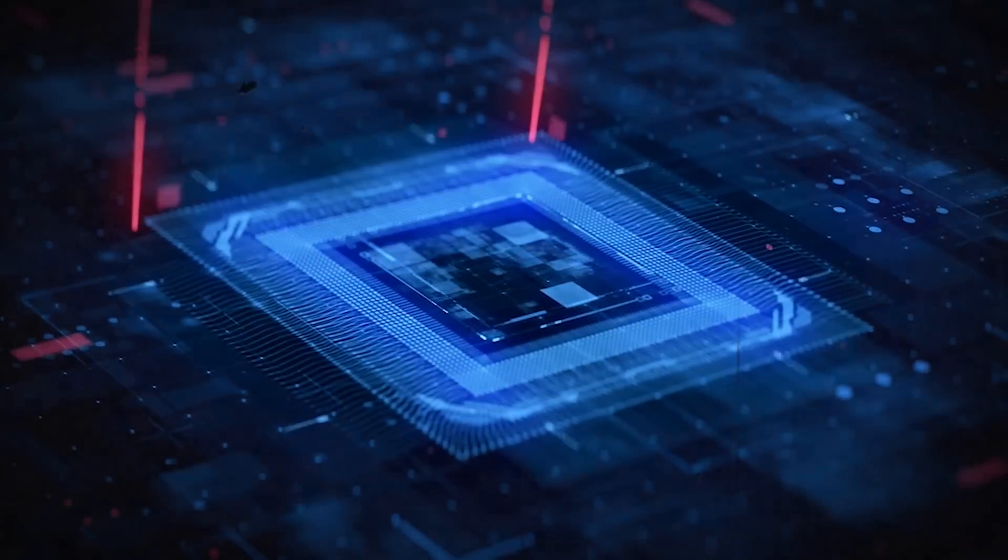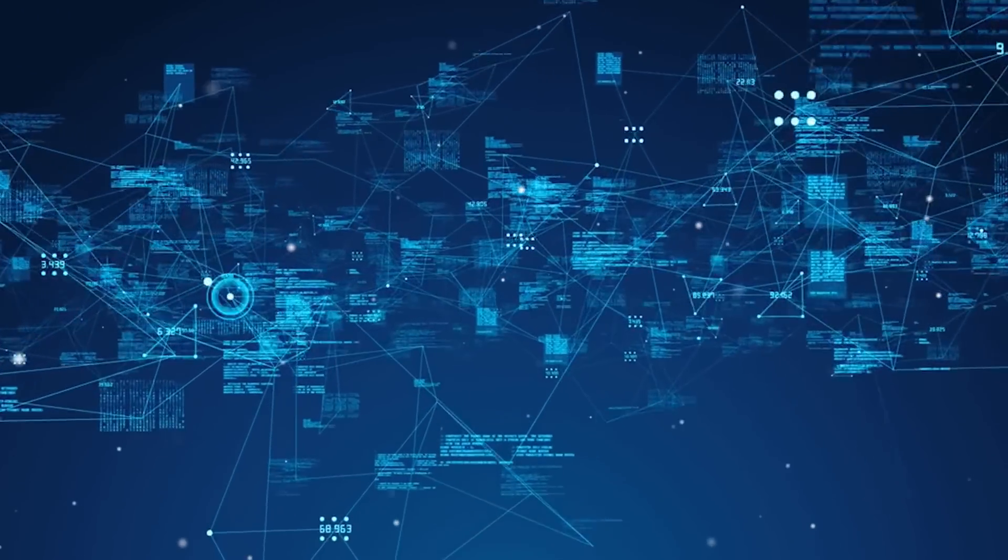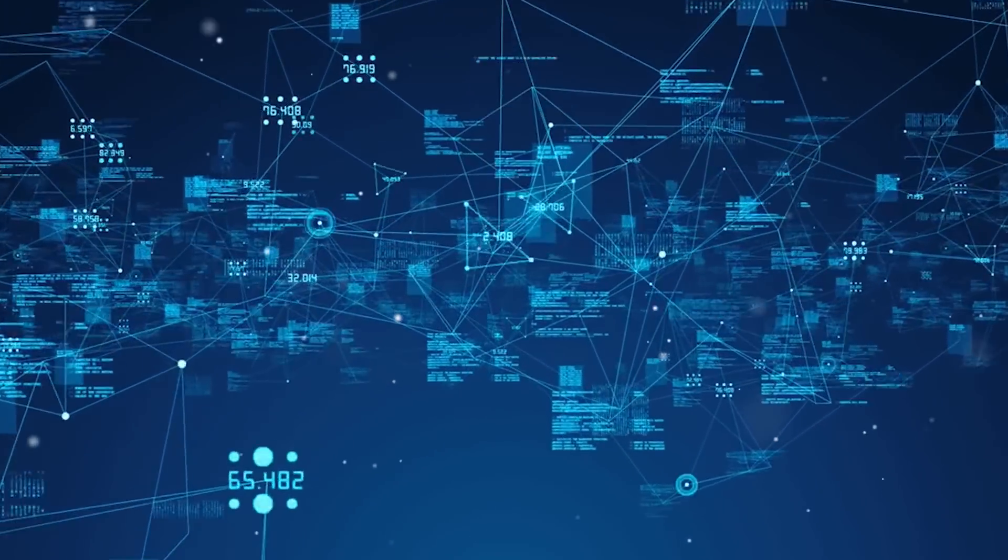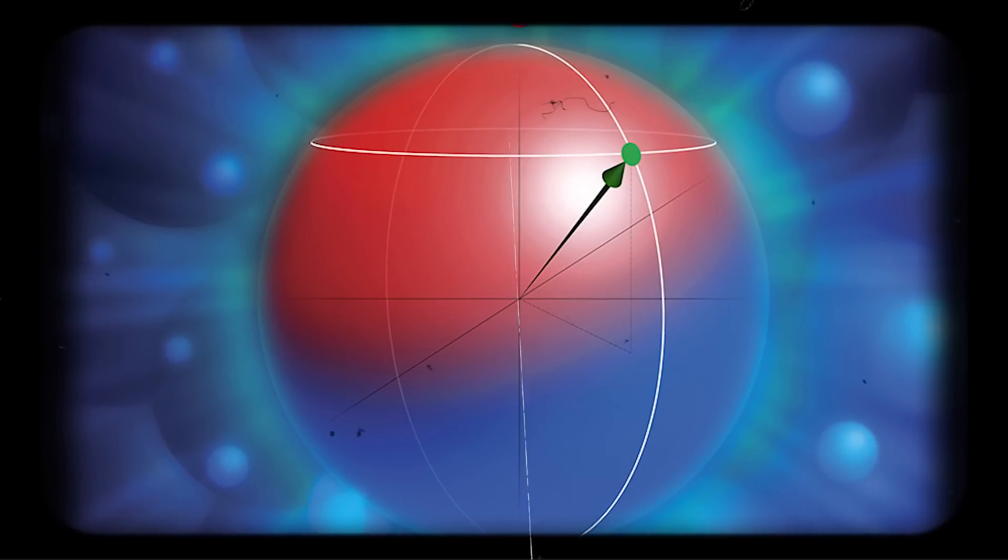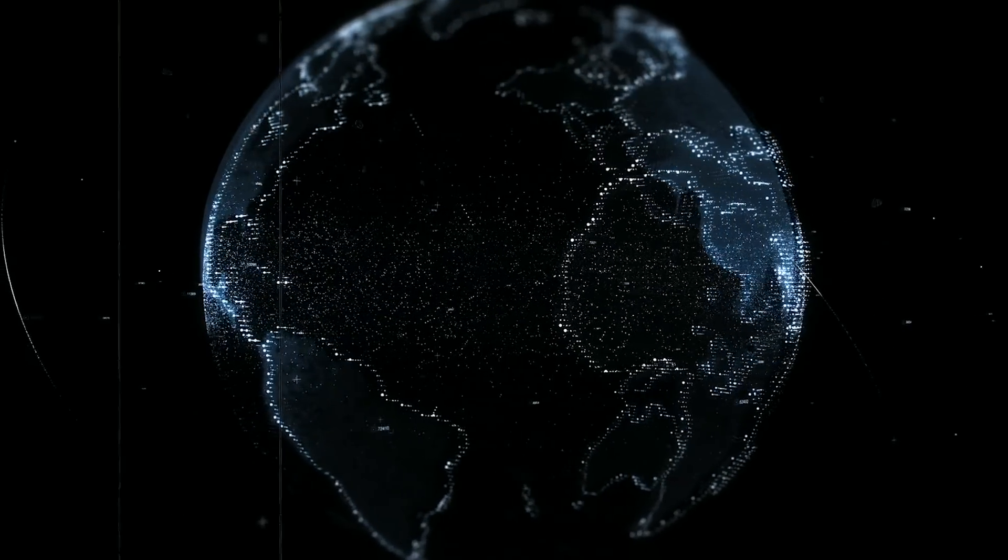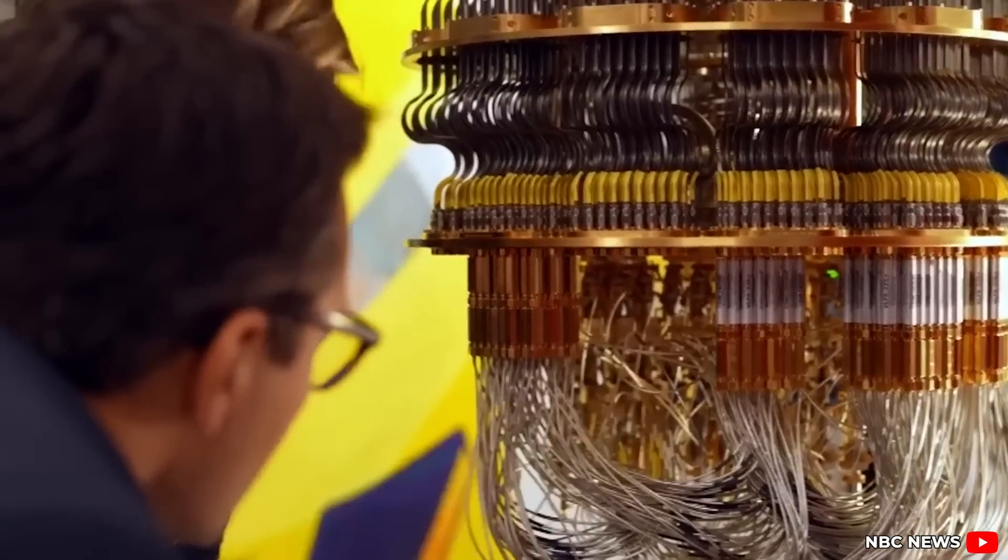Willow had already solved one of quantum computing's oldest headaches. The more qubits you added, the worse things got, or at least that's how it used to be. But Willow flipped the script. By scaling up its qubit arrays, it actually became more stable. Suddenly Google had a quantum machine that didn't fall apart when you tried to grow it.